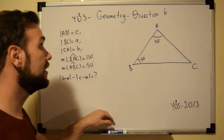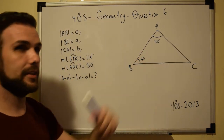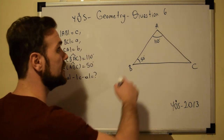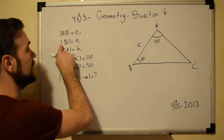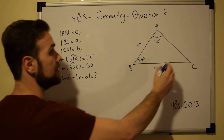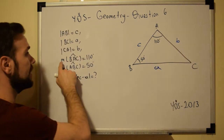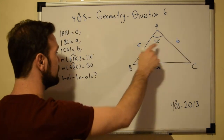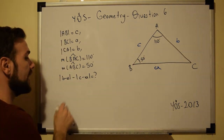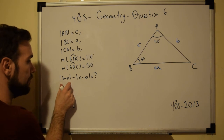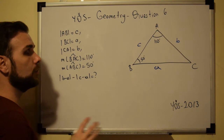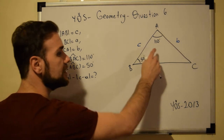Welcome to question number six. We have a triangle where side AB = c, side BC = a, and side CA = b. We are given angle BAC = 110 degrees and angle ABC = 50 degrees, and we are asked to find the absolute value of |b - a| minus |c - a|.